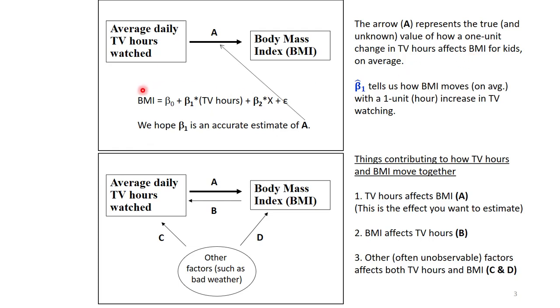We'll estimate a model of regressing BMI on TV hours and some other variables. The estimate for beta one hat is going to tell us how does BMI move on average with a one unit increase in TV watching holding those other factors constant. We hope that beta one is an accurate estimate of A. But the problem is that that causal effect is not the only reason why these two variables are going to move together. There could be other things contributing to that.